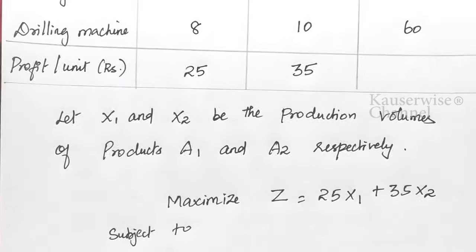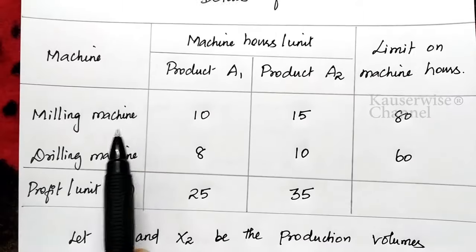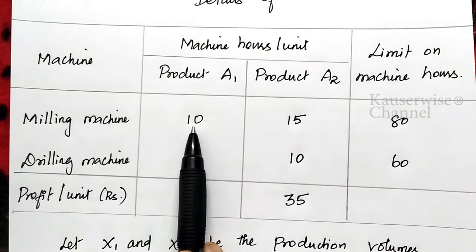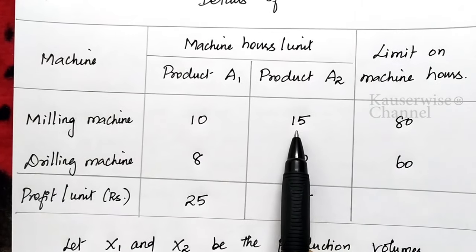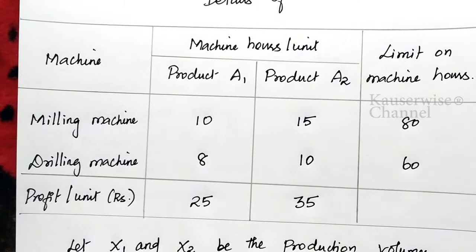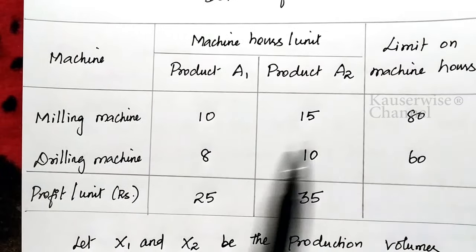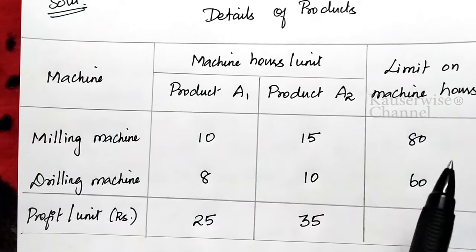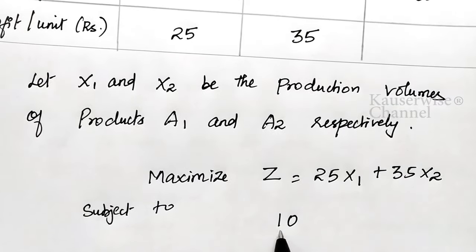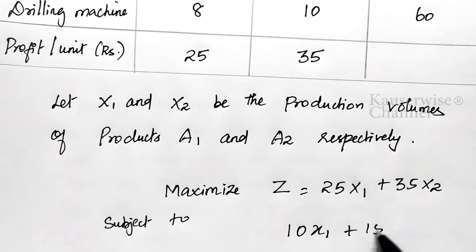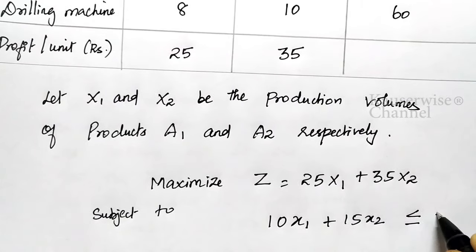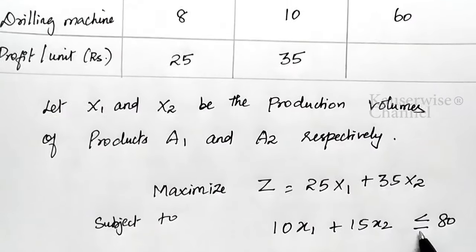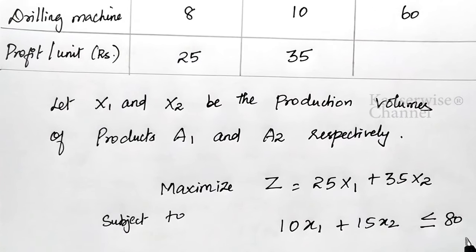Subject to: we have two constraints — the first one is the milling machine constraint and the second one is the drilling machine constraint. For milling machine, product A1 requires 10 hours per unit and product A2 requires 15 hours per unit, with a maximum limit of 80 hours. So the first constraint is: 10X1 + 15X2 ≤ 80, because you can use 80 hours or less than 80 hours per week.